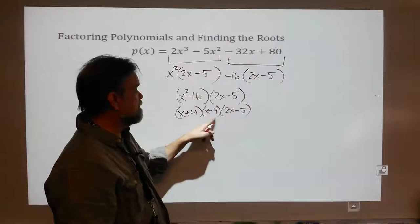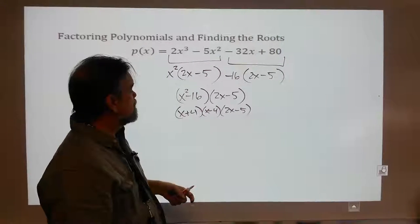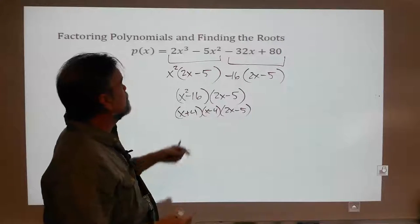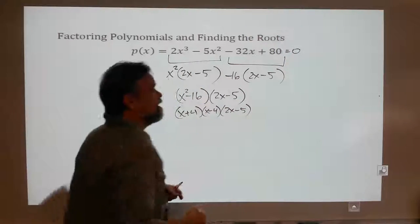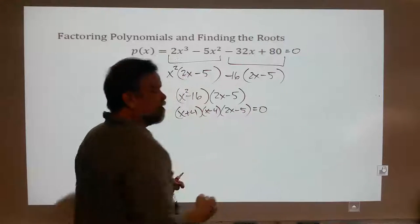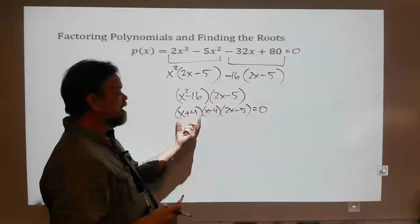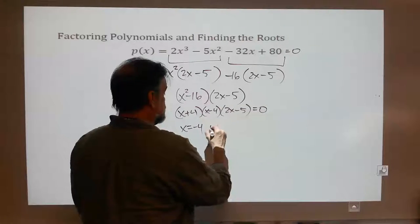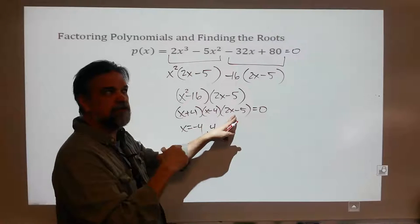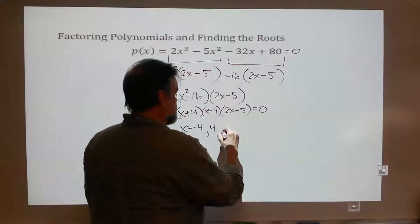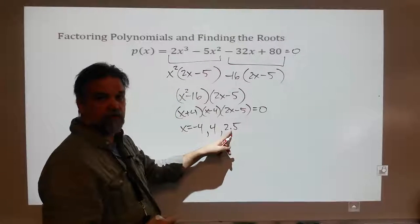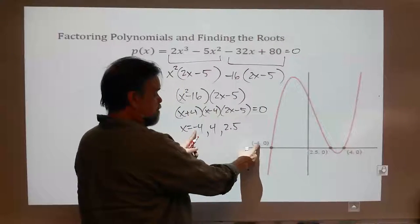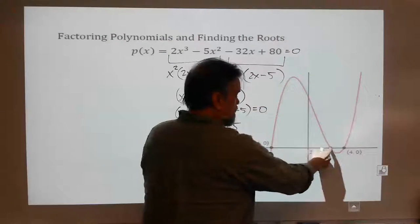If it's a third-degree polynomial, you're going to get at most three factors. Now I want to find the roots — set this thing equal to zero. Once you factor it, set each factor equal to zero: x plus 4 equals 0 gives x equals negative 4; x minus 4 equals 0 gives x equals 4; 2x minus 5 equals 0 gives x equals 2.5. Those are my three roots. And if I graph it, I will see negative 4, 4 right there, and 2.5 right there.